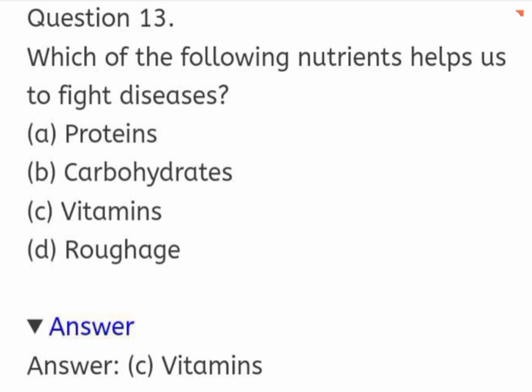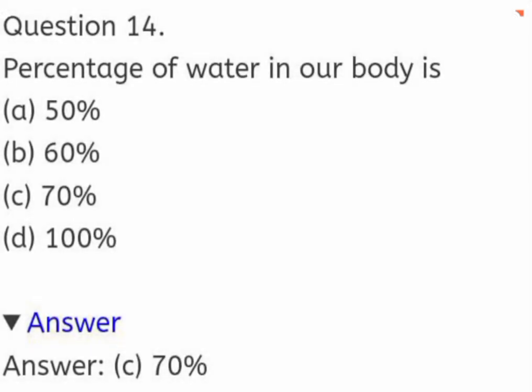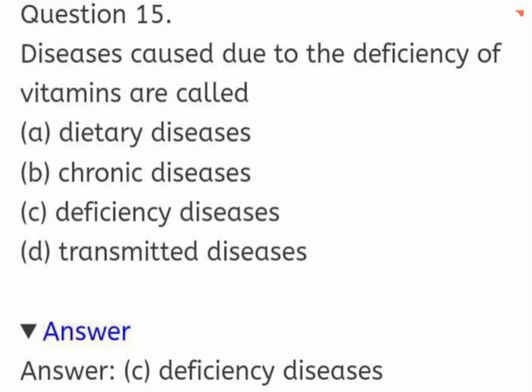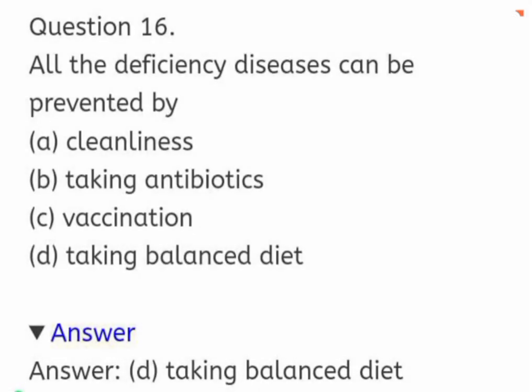Which of the following nutrients helps us to fight disease? Options: proteins, carbohydrates, vitamins, or roughage. The correct answer is vitamins. Percentage of water in our body is: 50%, 60%, 70%, or 100%. The correct answer is 70%. Disease caused due to the deficiency of vitamins is called: dietary disease, chronic disease, deficiency disease, or transmitted disease. The correct answer is deficiency disease. All deficiency diseases can be prevented by: cleanliness, taking antibiotics, vaccination, or taking a balanced diet. The correct answer is taking a balanced diet.